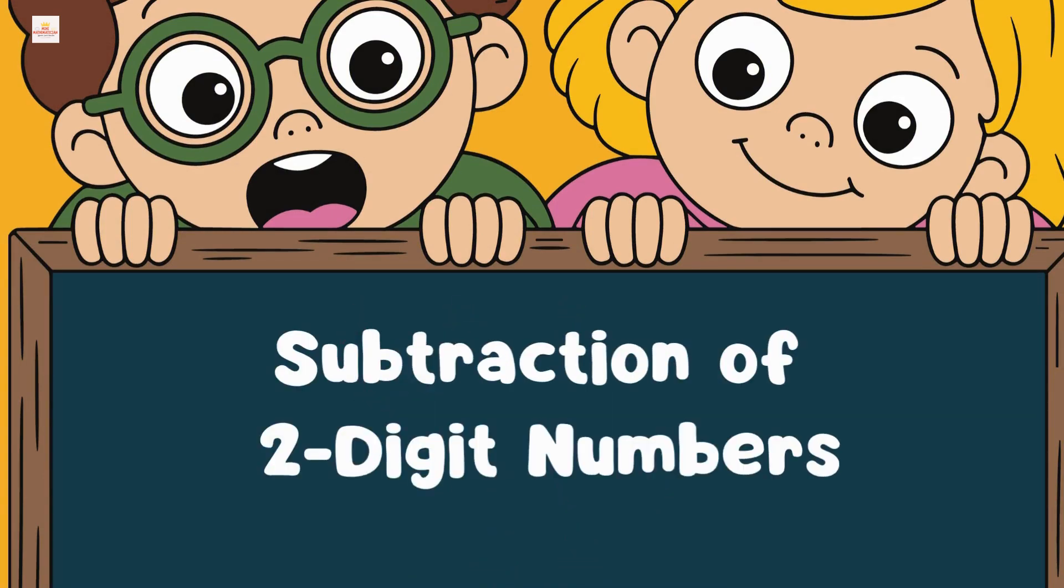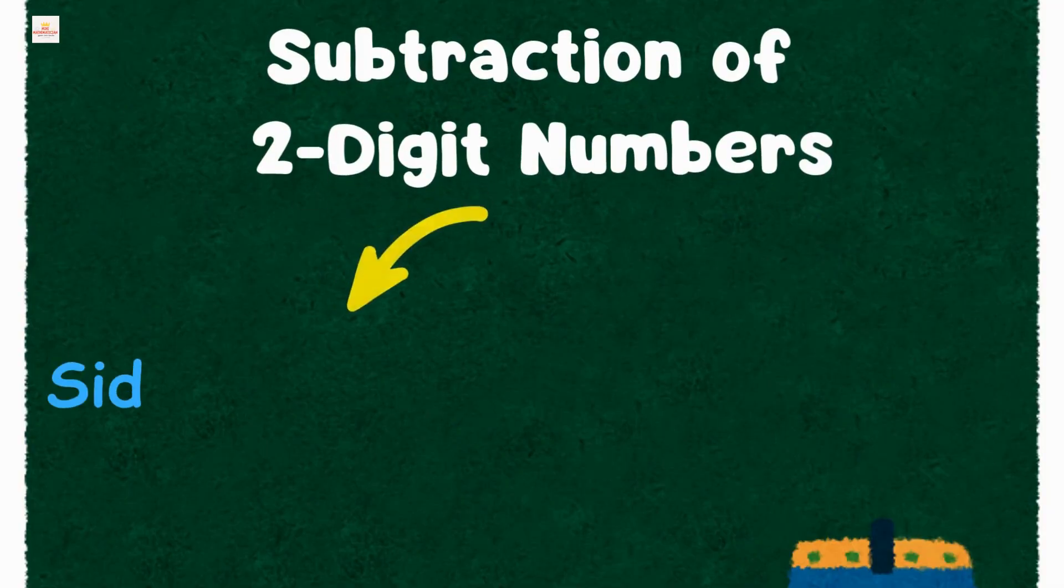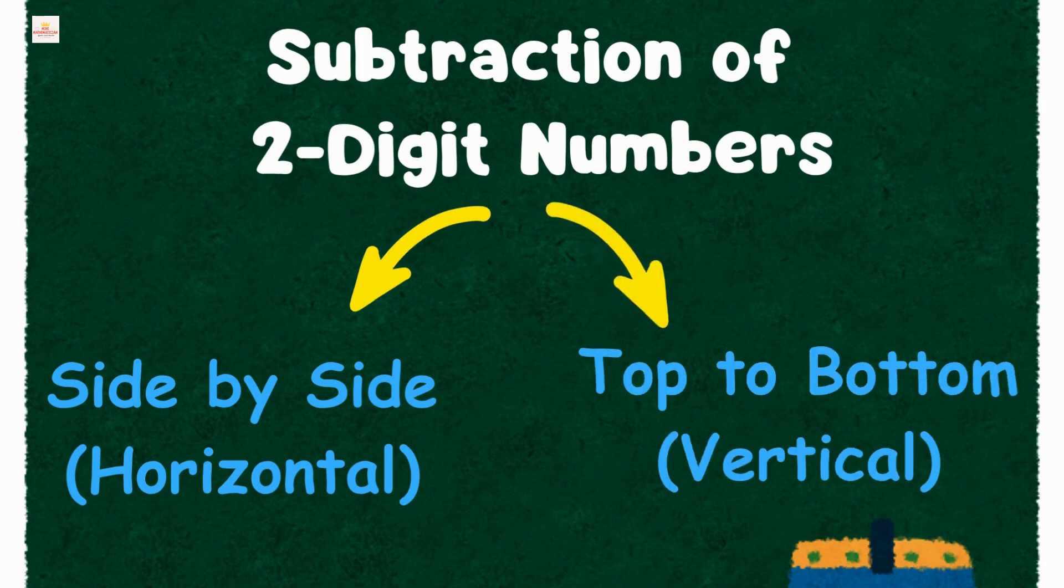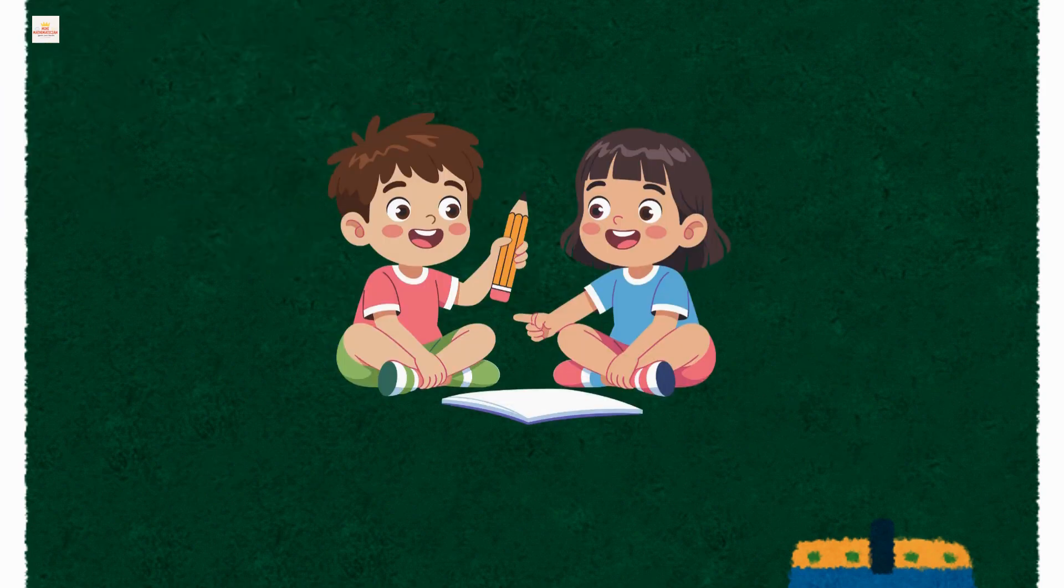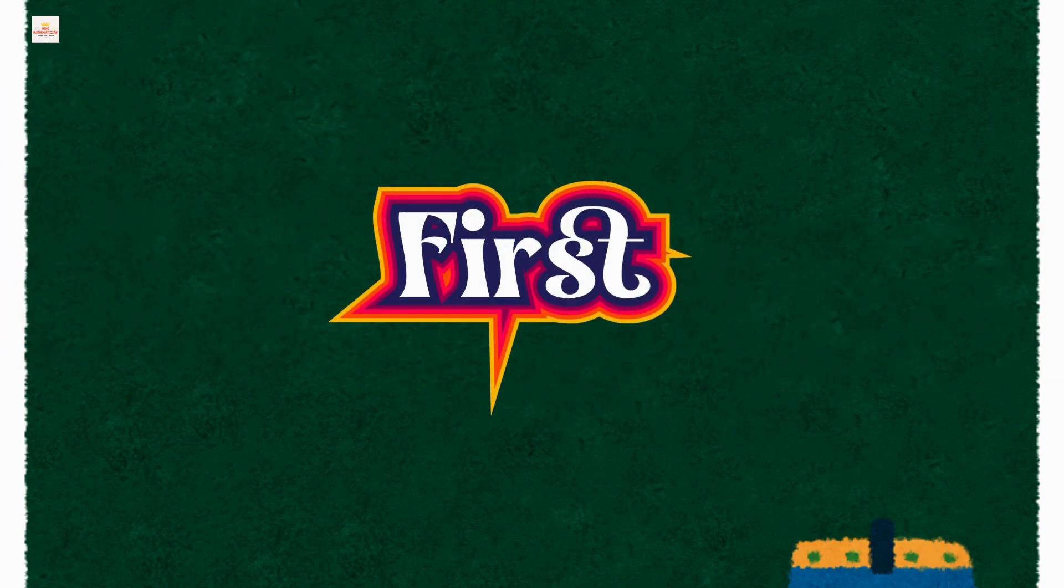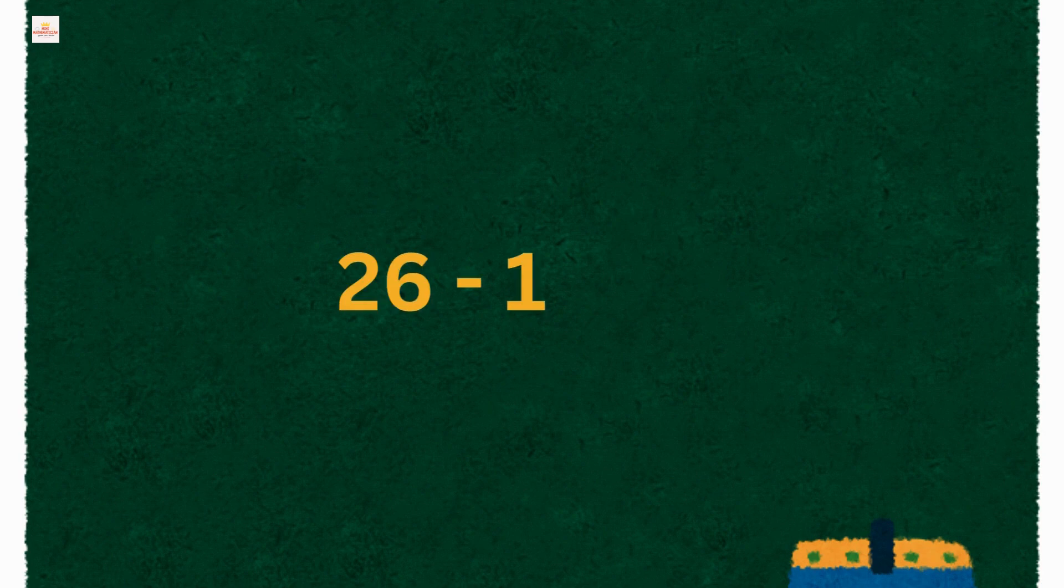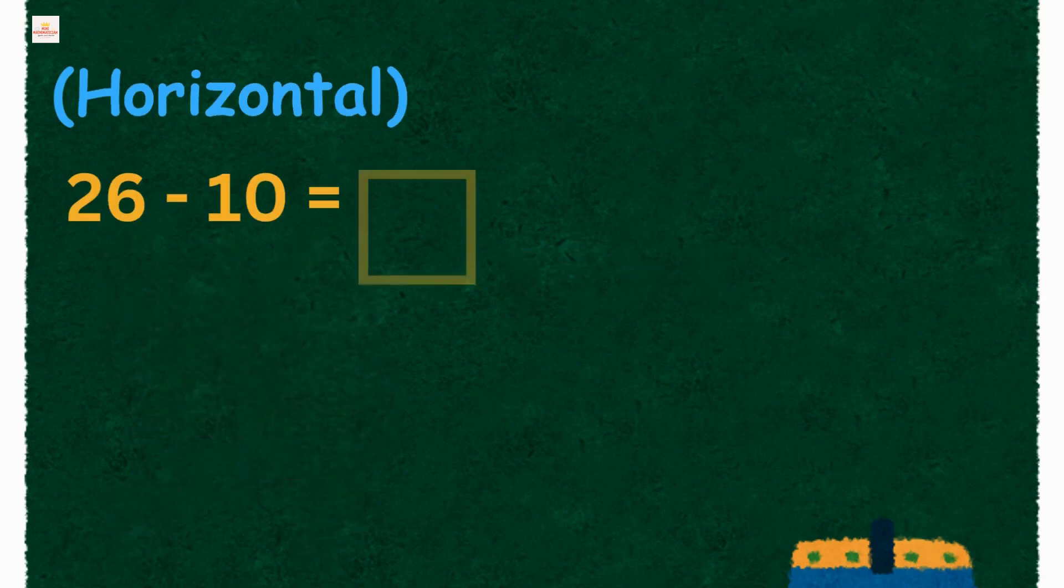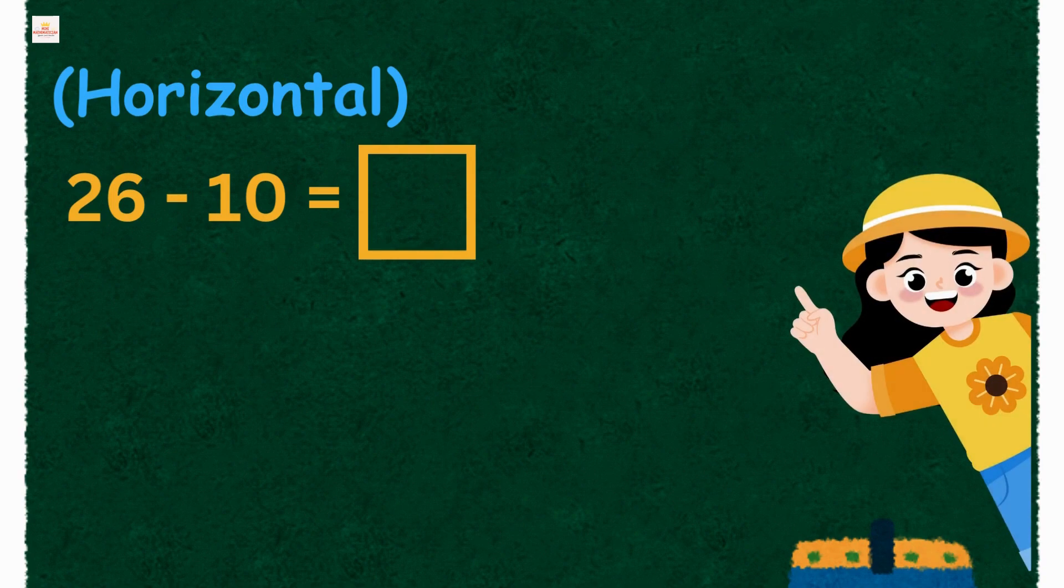In two ways: side by side called horizontal subtraction and top to bottom called vertical subtraction. Let's start the subtraction fun together. Our first subtraction fact is 26 minus 10. Let's first see it in horizontal form.